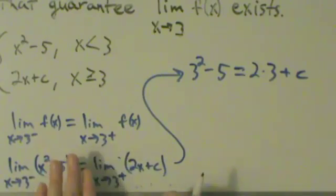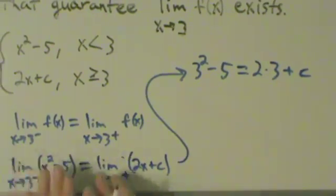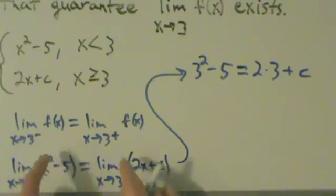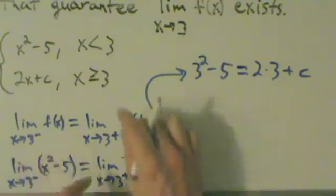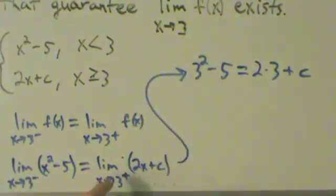So again, when we directly substitute, the fact that they're one-sided limits doesn't matter anymore. We use that fact here when we try to find out which piece of f of x we're supposed to use. That's when we use the fact that they're one-sided limits. Now it doesn't matter for direct substitution.